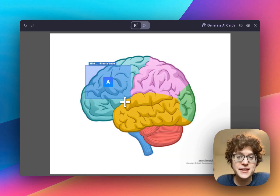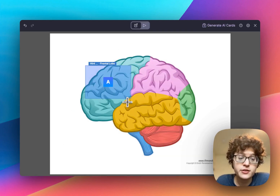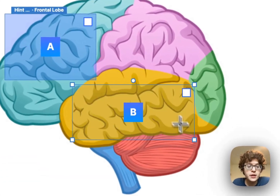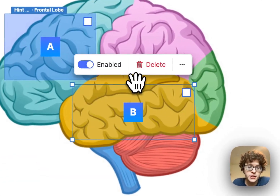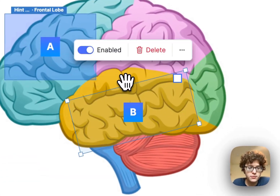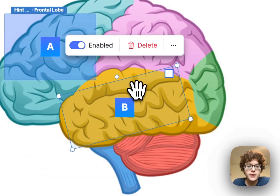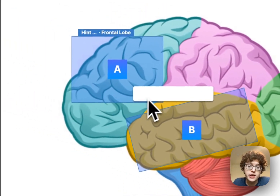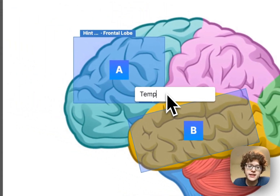You can quickly create these labels using keyboard shortcuts. If I go and create a box over the temporal lobe, maybe I'll rotate it a bit to get it looking right, I can then just press L on my keyboard and I'm immediately in labeling mode where I can type out my temporal lobe label.